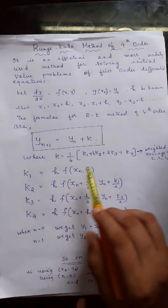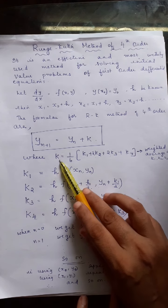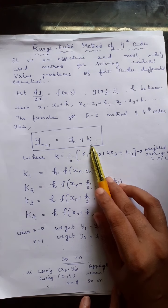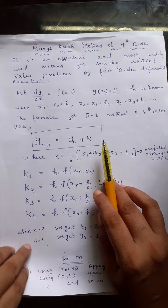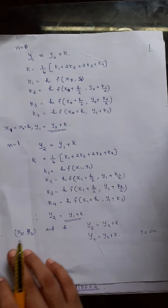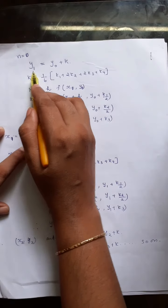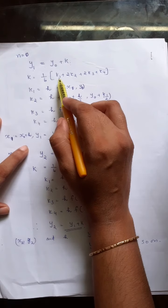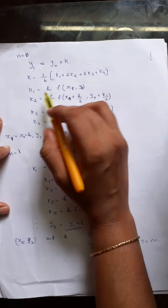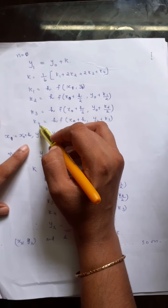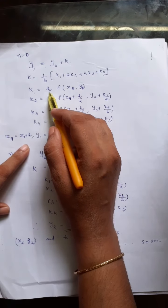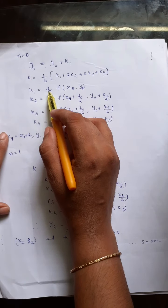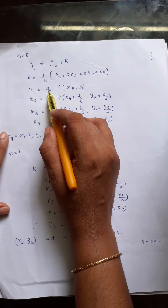Using these values and the weighted average formula, you can find k, and then yn+1 = yn + k. This is the general formula. When you put n = 0, you get y1 = y0 + k. To find k you require k1, k2, k3, k4, which are computed using the initial values x0, y0 and the step size h.